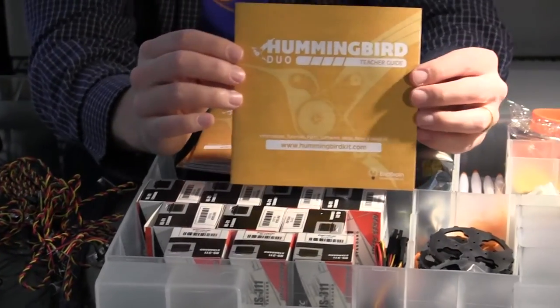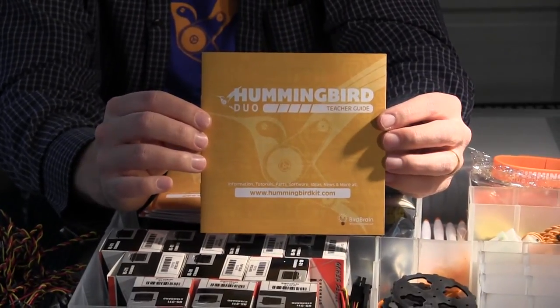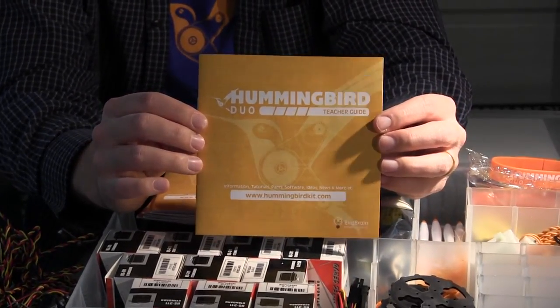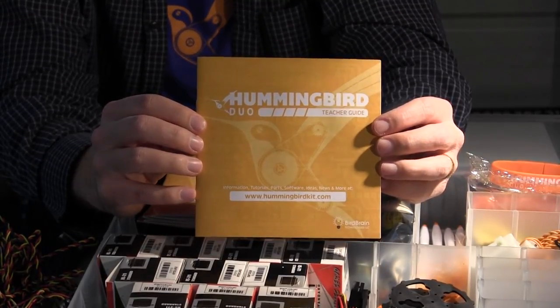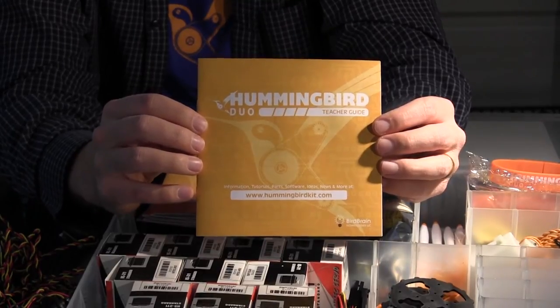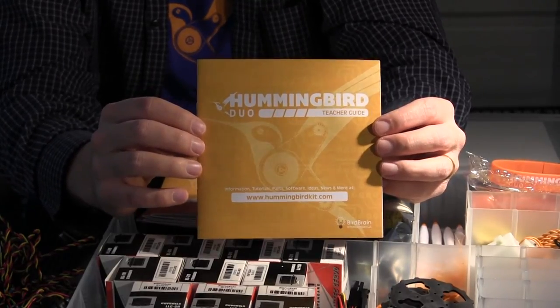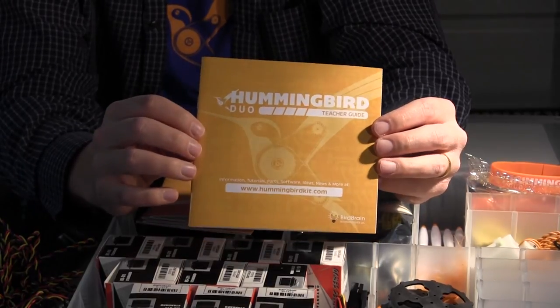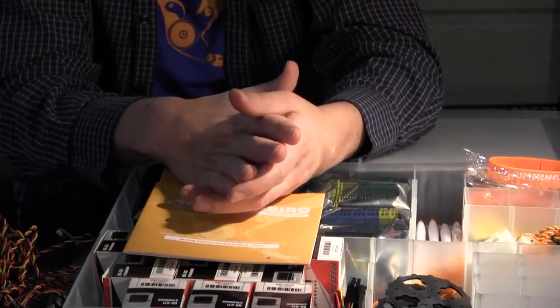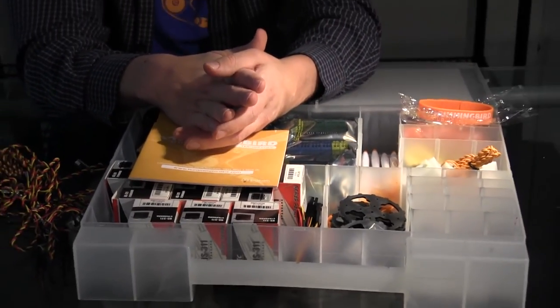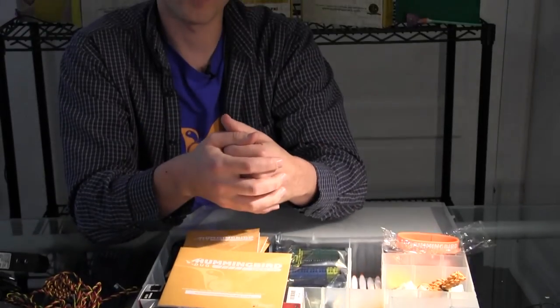And we have a teacher guide written by teachers who've used the original hummingbird kit in their classrooms. This contains activity ideas, discussion questions, student project planning workshop, as well as a teacher lesson plan template and many other materials. And finally, not shown, we are including Invent2Learn, which is an awesome book about putting making and tinkering and inventing type activities in the classroom, and we include that with every hummingbird classroom kit.